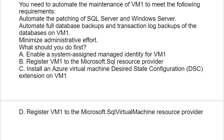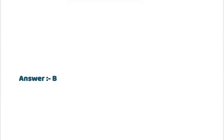Option A: Enable a system-assigned managed identity for VM1. Option B: Register VM1 to the Microsoft.SQL resource provider. Option C: Install an Azure Virtual Machine Desired State Configuration (DSC) extension on VM1. Option D: Register VM1 to the Microsoft.SQL virtual machine resource provider. The correct answer is Option B.